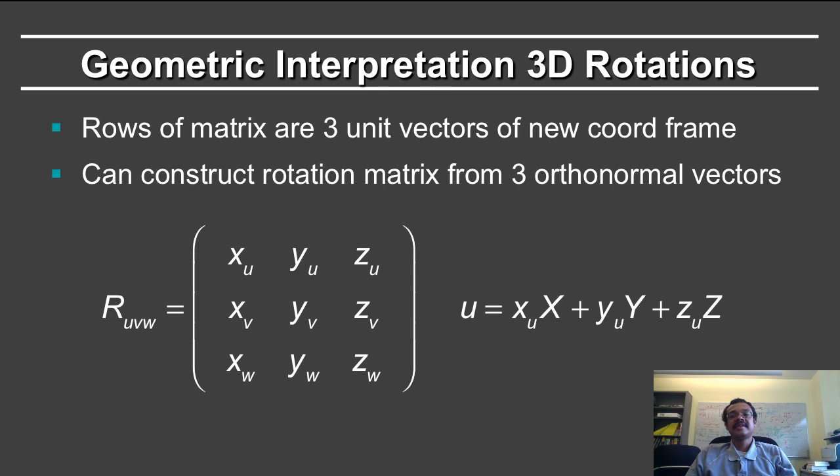Then we go back to what we discussed earlier in this lecture and also in the previous lecture. That the rows of the rotation matrix are the three unit vectors of the new coordinate frame. So given u, v and w, you can define the x, y and z coordinates of u.